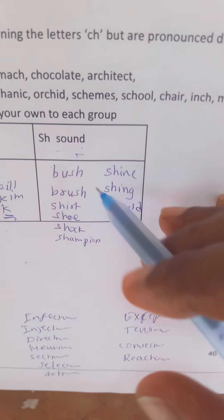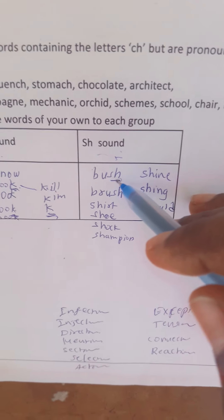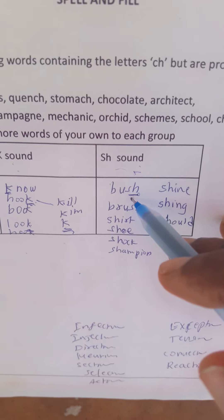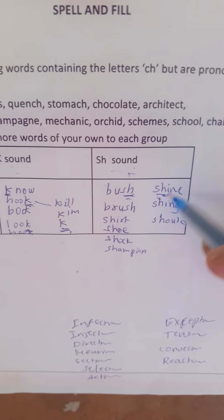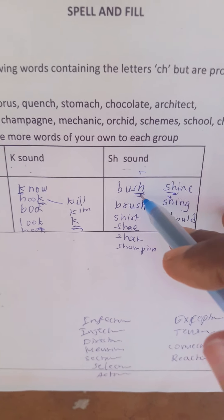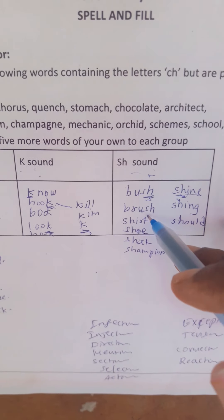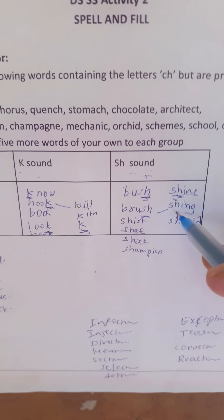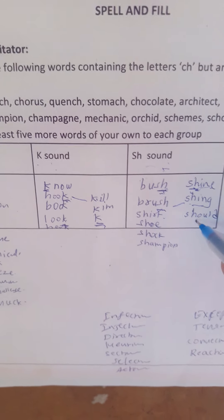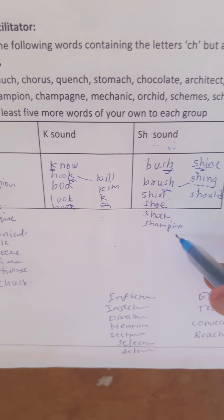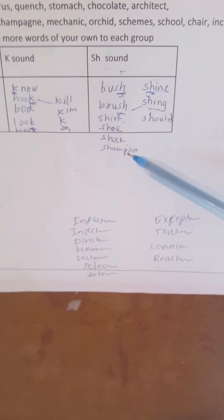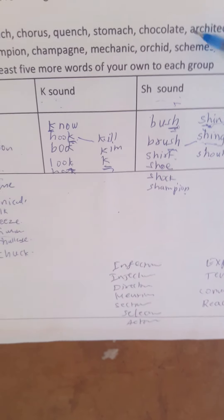S-H sound: 'bush'. This S-H — what sound does it give? 'Wish'. This S-H gives a continuous sound — 'shine'. 'Bush', 'shine', 'brush', 'shot', 'should', 'shoe', 'show'. So these are the stress words — sounds of consonant phonemes.